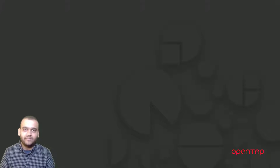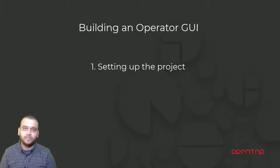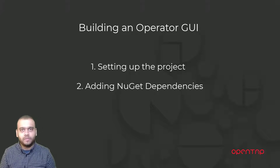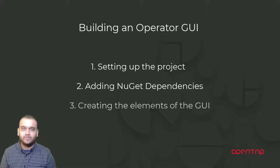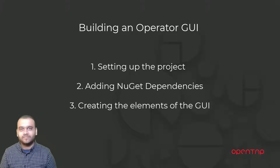Hi, and welcome to the second video in the OpenTab operator GUI series. In this video, we are first going to be setting up the project using Visual Studio. Then we are going to be adding the NuGet dependencies for this project. This includes both the OpenTab NuGet package, as well as a couple of other GUI related NuGet packages that are going to make the GUI prettier and also speed up our GUI development. Finally, we are going to be putting our basic GUI elements together. In the next video, we will look at how to integrate those basic GUI elements with the OpenTab SDK. So let's get started.